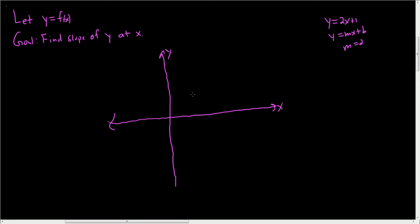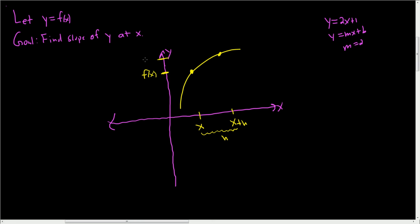So let's go ahead and draw a picture of our function. Let's assume that it looks like this, and maybe here's x. So we want to find the slope of this curve at this point right here at x. Now if this is x, then the y value here is going to be f of x. The way we do this is we pick another point over here and we call this point x plus h, so that this distance here is simply h. The corresponding y coordinate is f of x plus h.